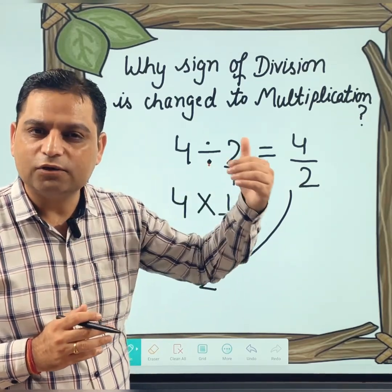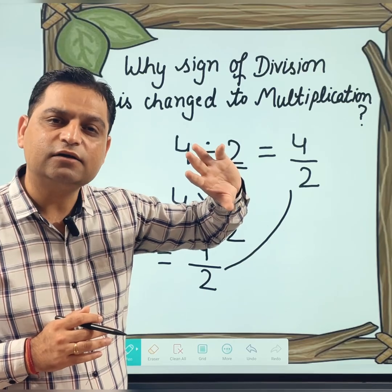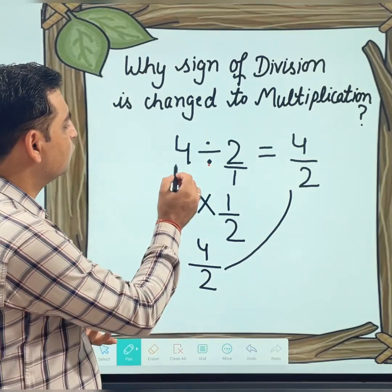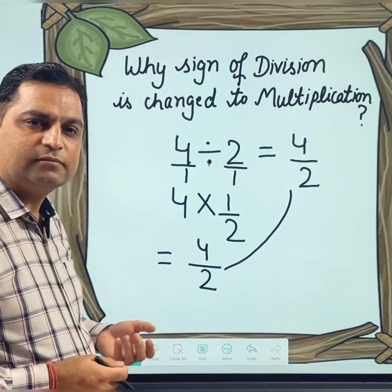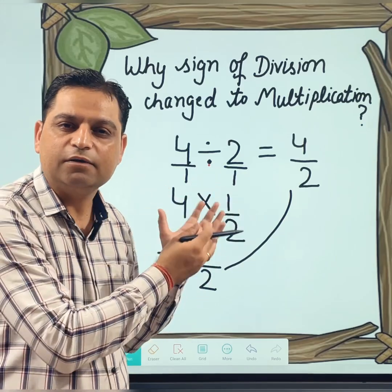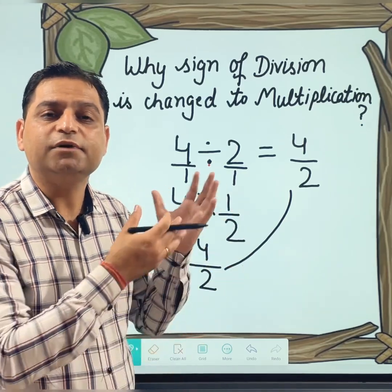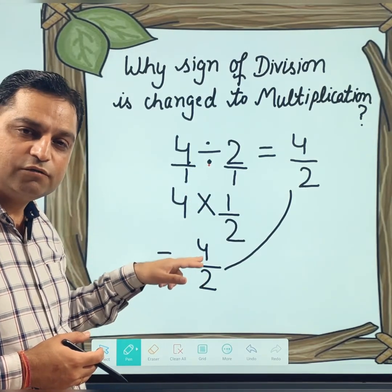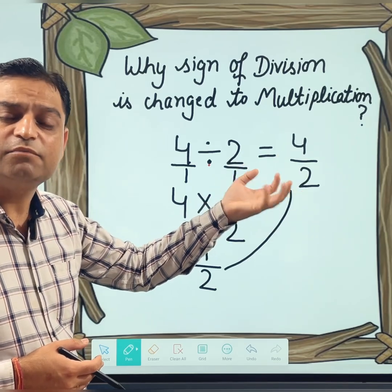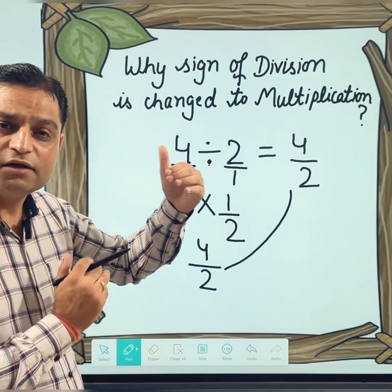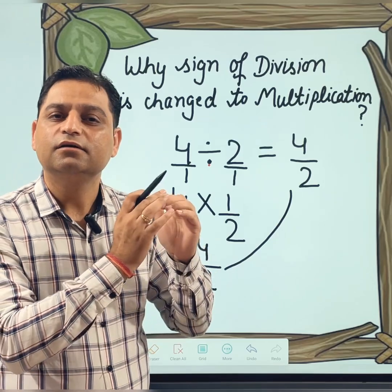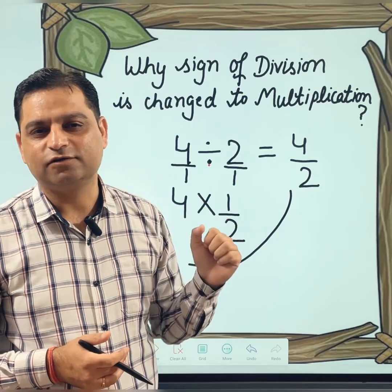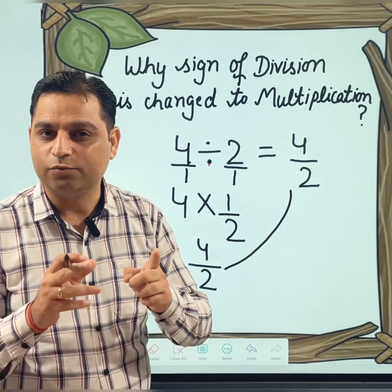If I change division into multiplication, I am getting the same result — so why do difficult calculations? In the case of fractions, someone might say you are doing this for an integer, not a fraction. But 4 can be written as 4 over 1, which makes it a fraction — an improper fraction, but a fraction nonetheless. This is the basic rule behind it: when nothing changes by converting division to multiplication with a reciprocal, that confirms we can always do this. I hope you are clear with that. Thank you so much for watching the video.